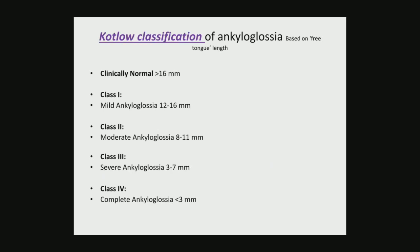Before doing definitive management, we should diagnose the condition and assess the severity of ankyloglossia. Cote's classification is employed to assess the degree of ankyloglossia based on free tongue attachment length. A normal free tongue attachment length is more than 16 mm. Class 1 is mild ankyloglossia with 12–16 mm of free tongue. Class 2 is moderate ankyloglossia with 8–11 mm. Class 3 is severe ankyloglossia with 3–7 mm. Class 4 is complete ankyloglossia where free tongue is less than 2 mm.